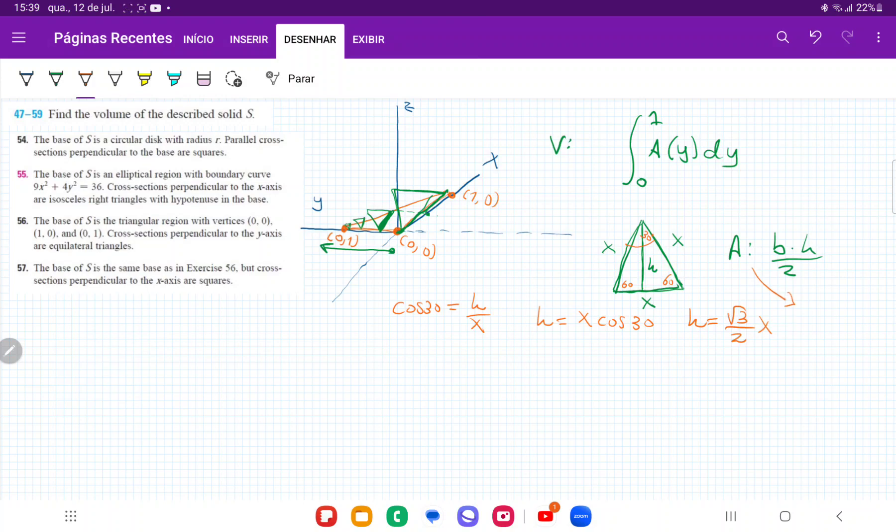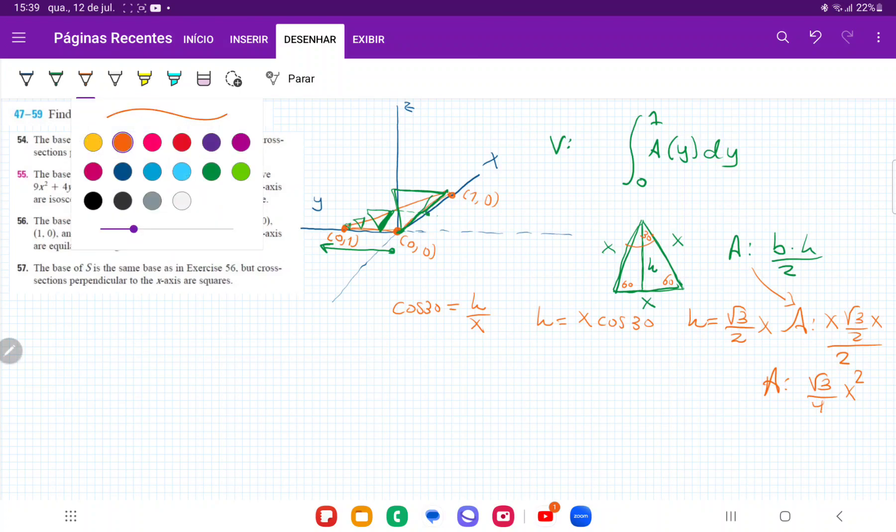And so then this area here becomes the base is x times height, which is root 3 over 2 times x divided by 2. And therefore, the area is equal to root 3 over 4 x squared. So we have the area in terms of x, but that's not what we want. We want it in terms of y, since we're summing up across the y-axis.